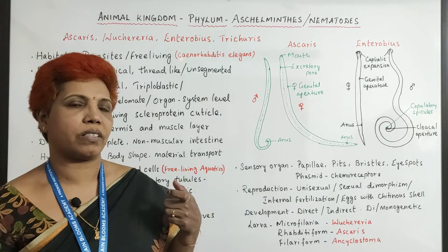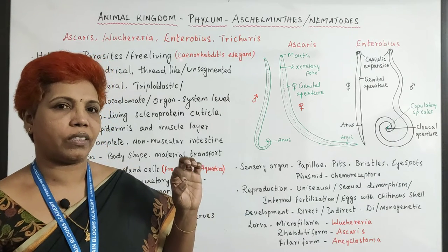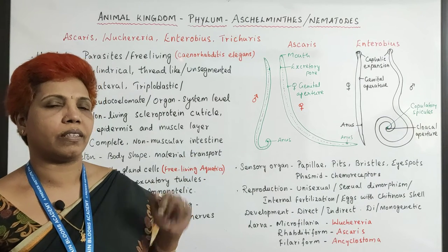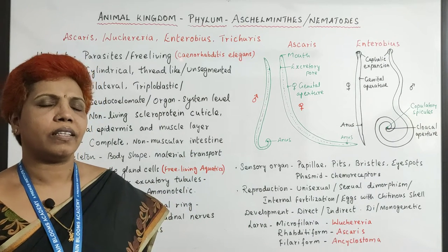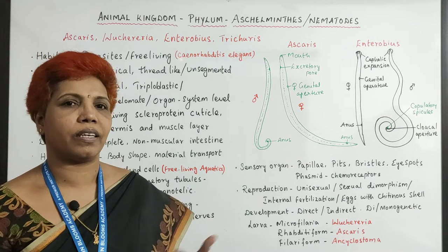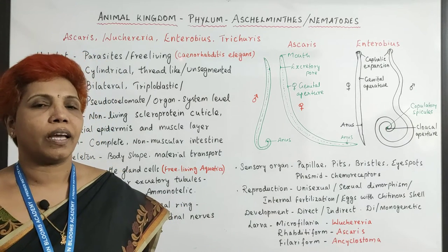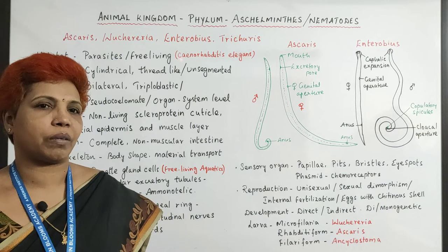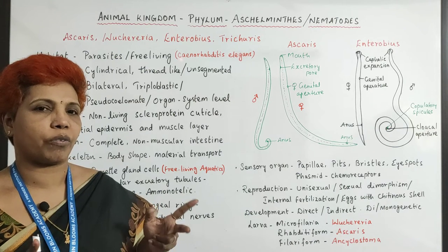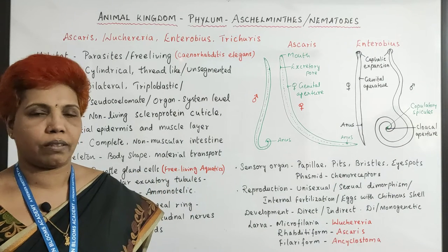Simply they are roundworms — when you take a cross section, a typical round shape can be seen under the microscope. They are free living, parasitic, terrestrial, and aquatic. A very striking feature compared to the previous category is that they are sexually dimorphic — the male and female worms are separate.